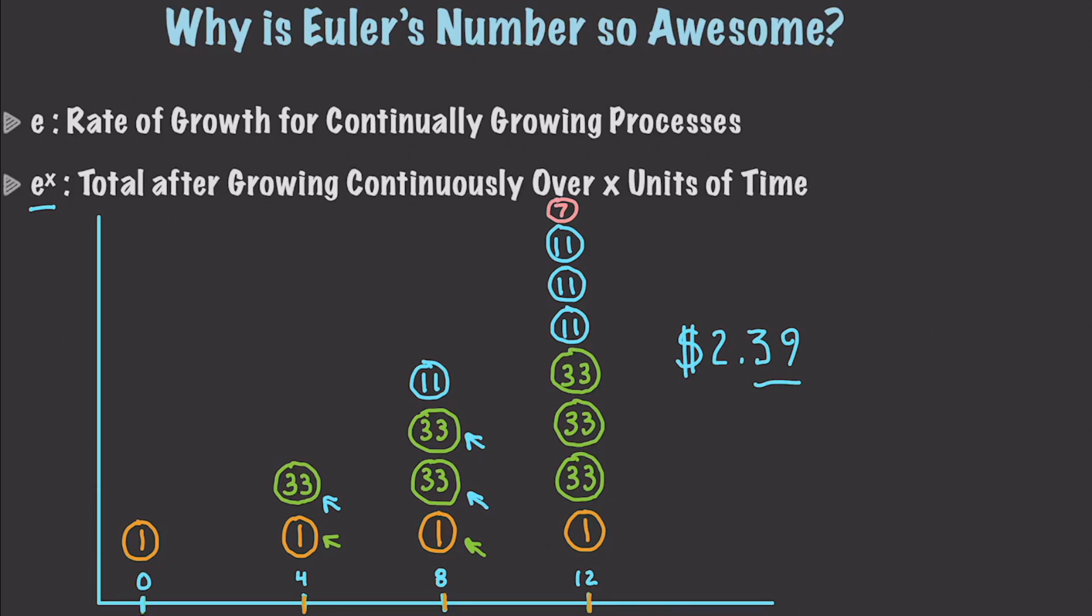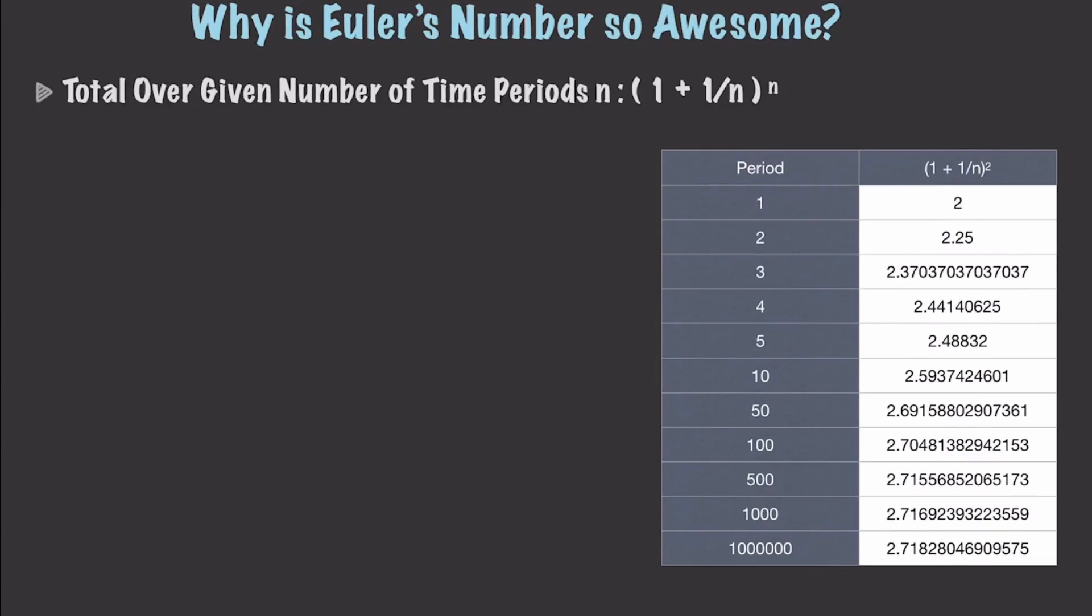Well, that's 39 cents more than if we just earned interest of 100% after one year. So, you might start thinking to yourself, Can we generate an infinite amount of money if we collect interest at a specific target time period? Like, let's say, every week, or every minute, or every second?